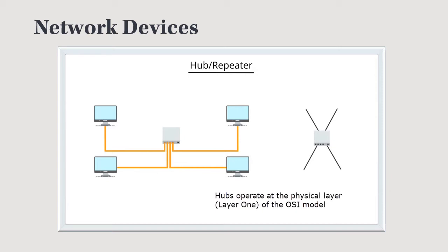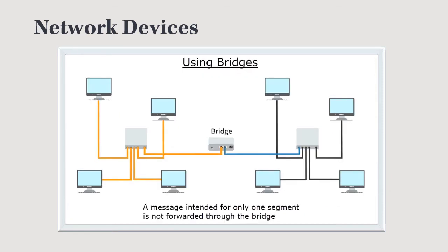A hub operates at layer one of the OSI model because it's not doing any filtering or switching — it's simply connecting devices with a physical wire. If you fill up the ports on your hub, or want to create different segments, you could connect two hubs using a bridge. When a signal comes in from one of the hosts, the hub simply repeats that signal out to all connected hosts.